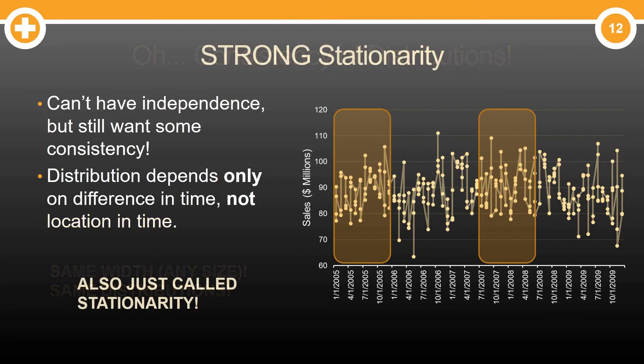This is what we refer to as strong stationarity. Everything in these windows — the entire distribution — is the same as this window moves across your entire data set. Some people also just refer to this as stationarity by itself instead of using the word strong stationarity.